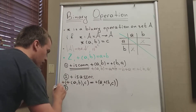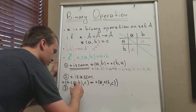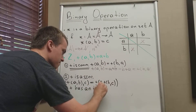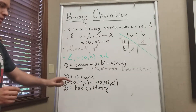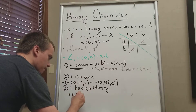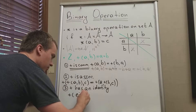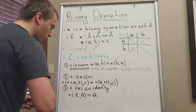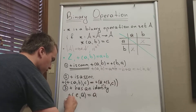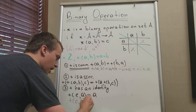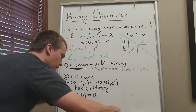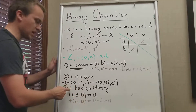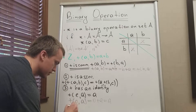The next property: the binary operation plus has an identity element. This means there exists some element E such that the operation of E and A gives back A. For integers, that element is zero — because zero plus A equals A. So plus has identity element zero.